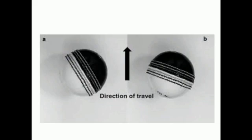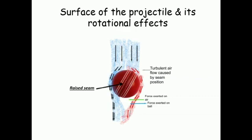The fifth important factor is the surface of the projectile and its rotational effects. Sometimes the projectile may not be truly spherical. A cricket ball, for example, has a rough surface at its raised seam. When such a ball moves at speed while also rotating, it can impact the eye causing lid lacerations and more severe surface injuries. So the surface and rotational effects of the projectile can significantly affect the nature of eye injuries.